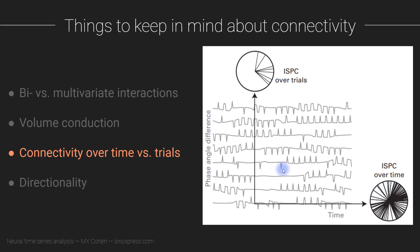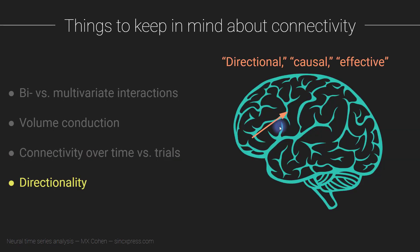Alternatively, you can measure synchronization at the same time point over different trials. This gives you better temporal resolution — more precise information about when the synchronization is occurring — but you're looking at average synchronization over the span of many trials, maybe 100 trials. If this distinction between connectivity over time versus connectivity over trials isn't totally clear, don't worry — there's going to be a whole video just about this topic later in the section.